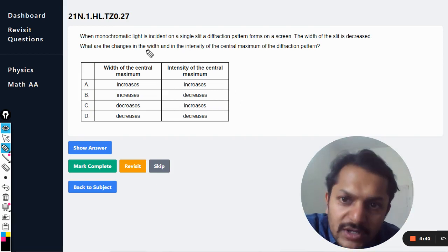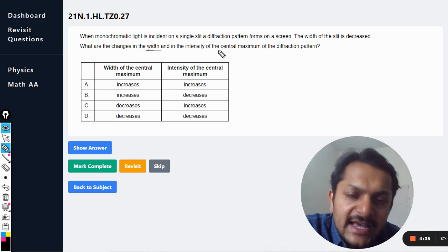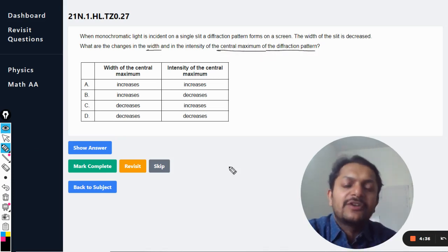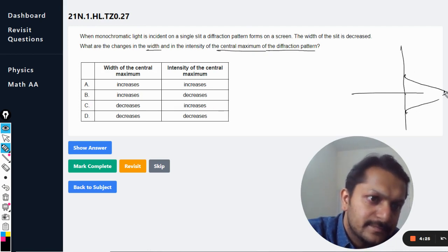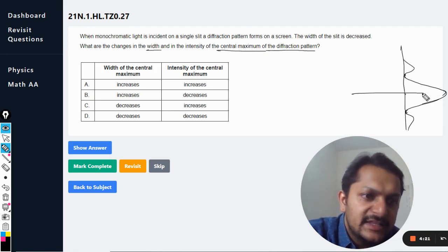My student, first of all we must know what is the formula for the width of the central maxima of the diffraction pattern. And I'm going to tell you here. Let us say this is the screen and a diffraction pattern is coming here like this. This is the diffraction pattern and this is the central point.